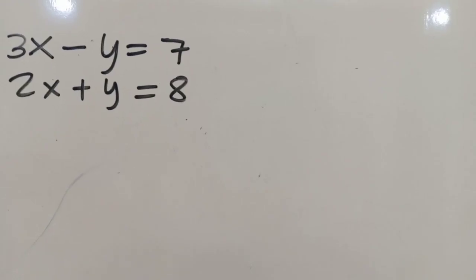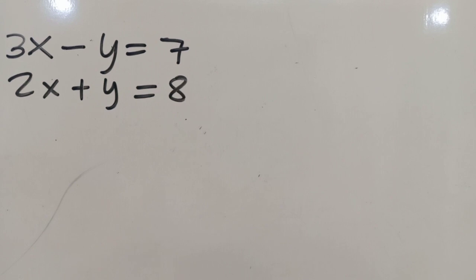Hello guys, good afternoon. Let's try to solve systems of linear equations in two variables. As you can see on the board, we have 3x minus y is equal to 7, and 2x plus y is equal to 8. Let's try to find the values of x and y.